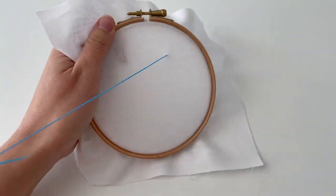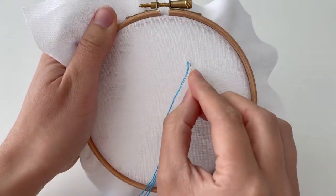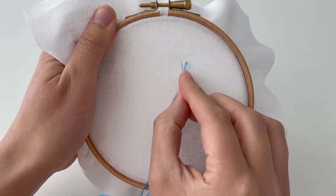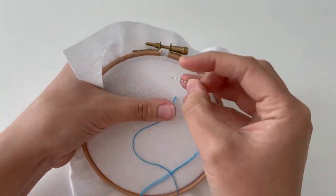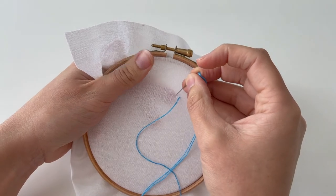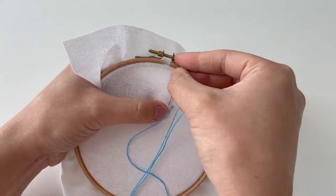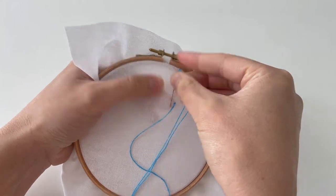So what you need to do is come up through your fabric and then you can either draw on a horizontal line or you can just kind of imagine it. I'm going to freestyle it as usual, but if you find it easier, draw it on with something like an air erasable pen, something that's going to disappear.